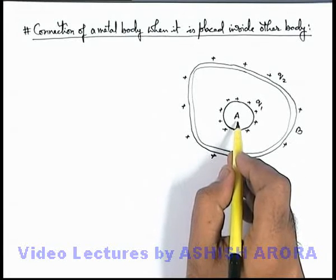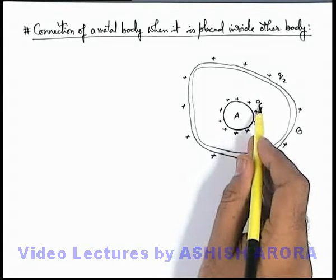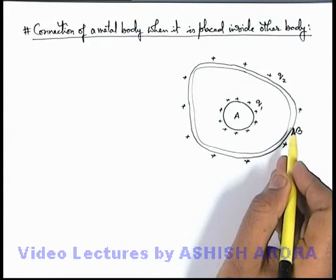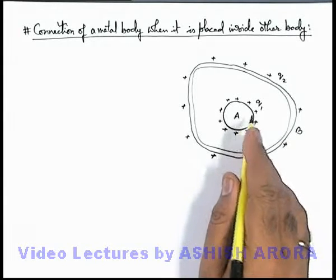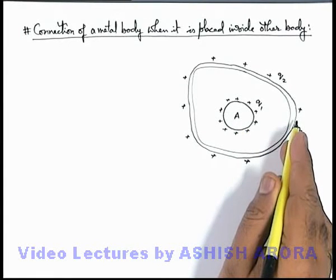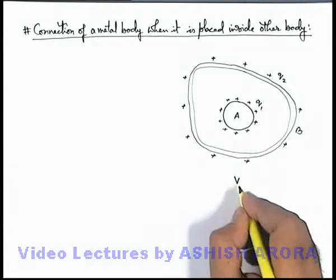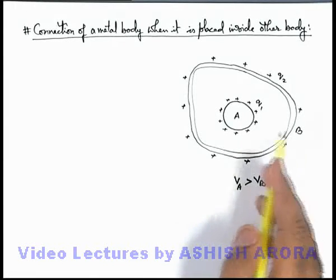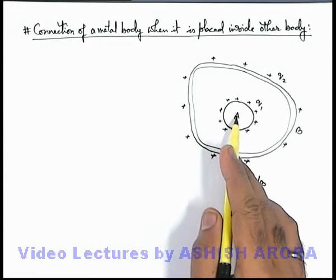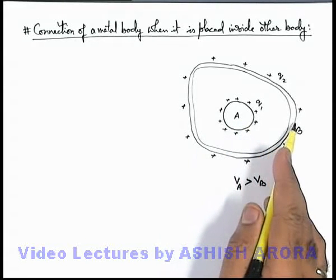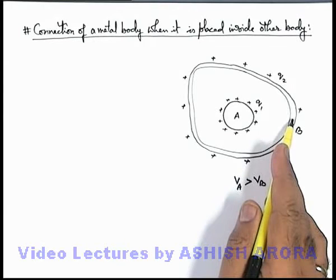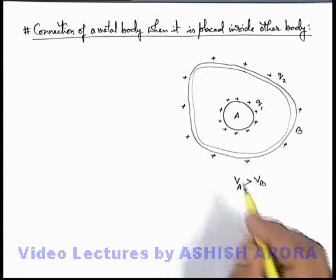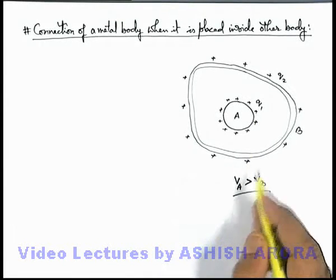As soon as we place a body inside, it'll be having some potential due to its own charge as well as potential due to the charge on the outer body. When two bodies are having similar polarity of charges and one is placed inside the other, potential at inside body will always be more than the potential of outside body. Because it'll be having more potential due to its own charge compared to the potential it'll produce on the outer body. Whereas outer body will produce the same potential on itself as well as on all its interior points. So always potential on the inner body is more than that of the outer body.